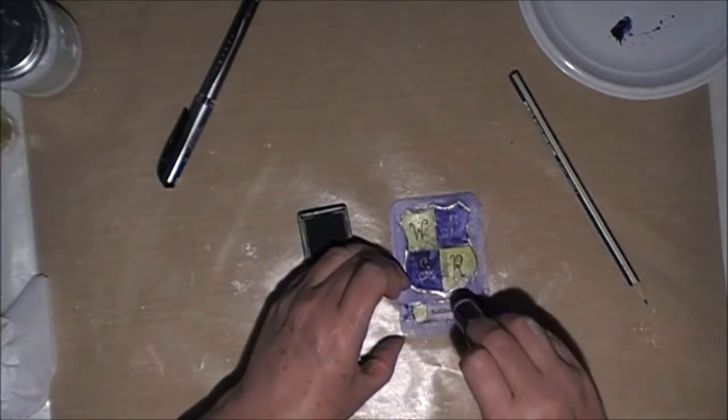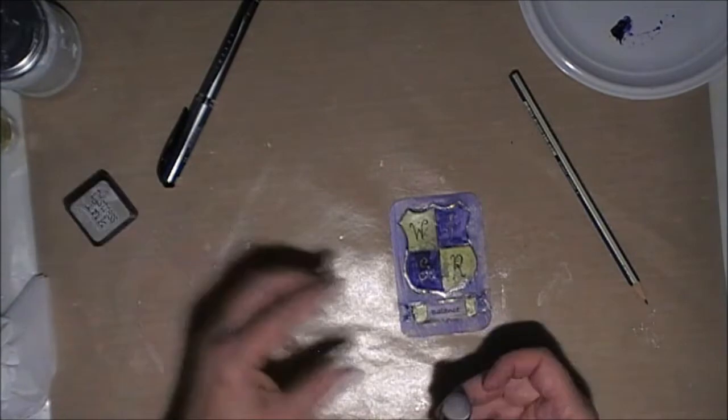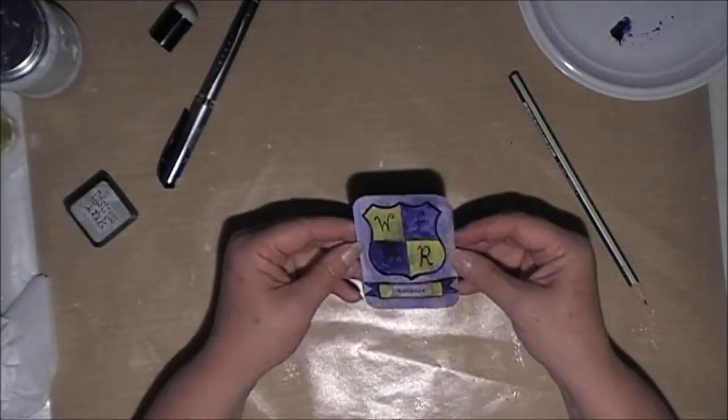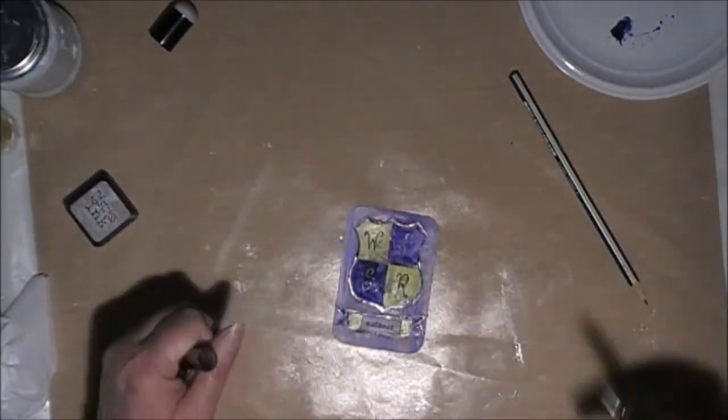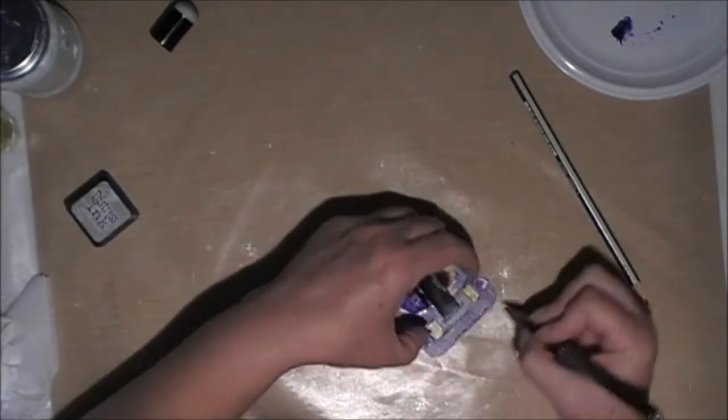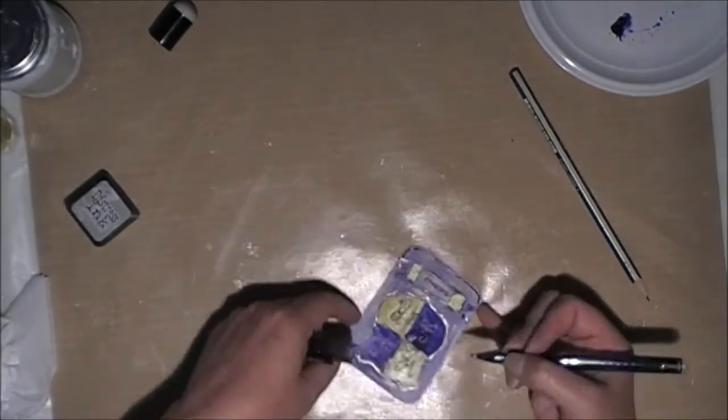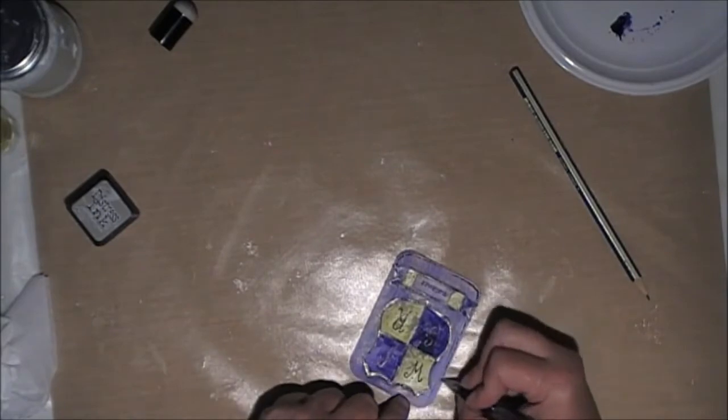Just going in again with the pumice stone on top of that word balance. Now just going around the edges a little bit with the gel pen.